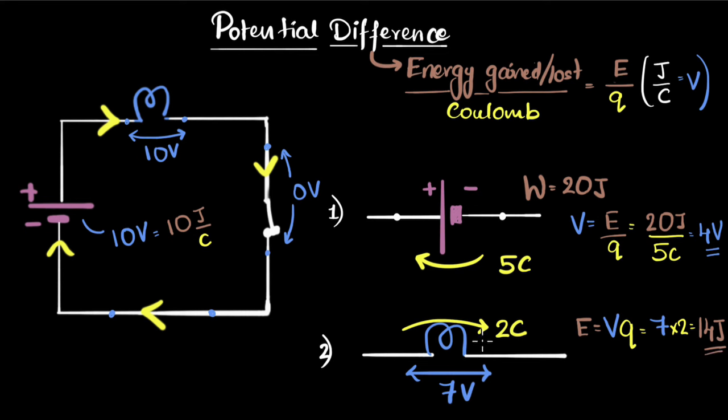We know that the 14 joules of energy must have been lost by these charges. And you can even directly think and do it without the formula. Seven volt represents seven joules per coulomb, right? It means that one coulomb lost seven joules of energy. So two coulombs would have lost 14 joules of energy. So you could have directly done it as well.